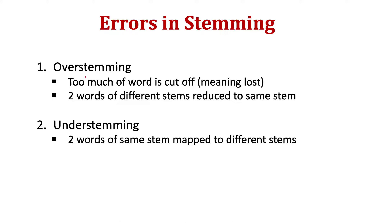There are mainly two types of errors in stemming: one is overstemming and the second is understemming. Overstemming, as the name says, means too much of the word is cut off. In that case, if too much is removed, the meaning of the word may be lost, and words having different stems may be incorrectly mapped to the same stem.